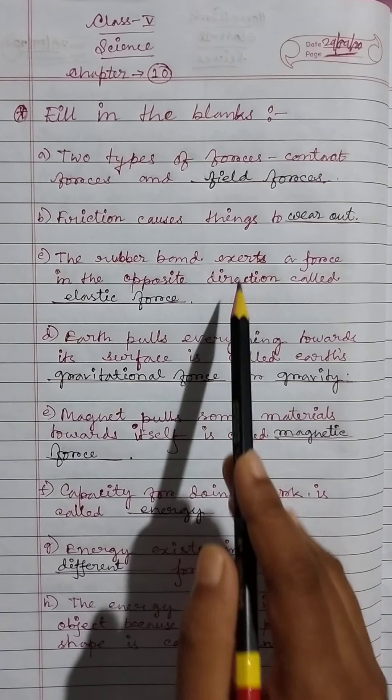The energy stored in an object because of its position or shape is called potential energy. The energy possessed by an object because of its motion is called kinetic energy. Electrical energy or electricity is one of the most common forms of energy we use.